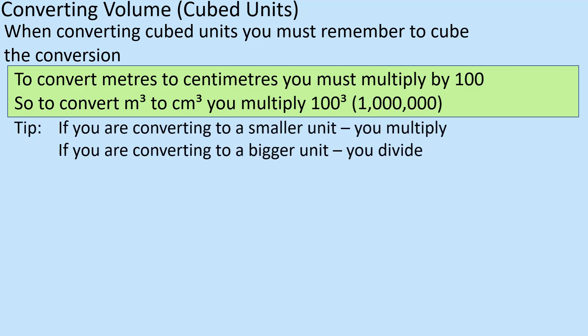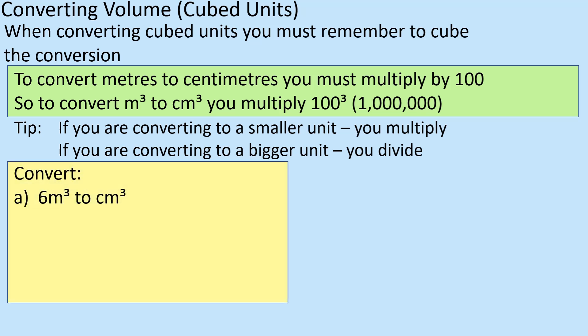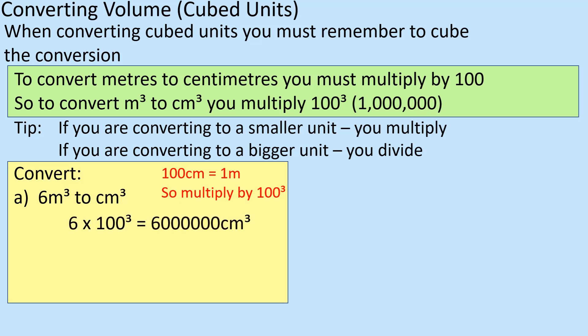Same as before: if you're converting to a smaller unit, you multiply; if you're going to a bigger unit, you divide. So, 6 metres cubed to centimetres cubed: the unit is getting smaller, so multiply. The conversion is 100, so multiply by 100 three times — that's 6 times 100 cubed — which is 6 million centimetres cubed.